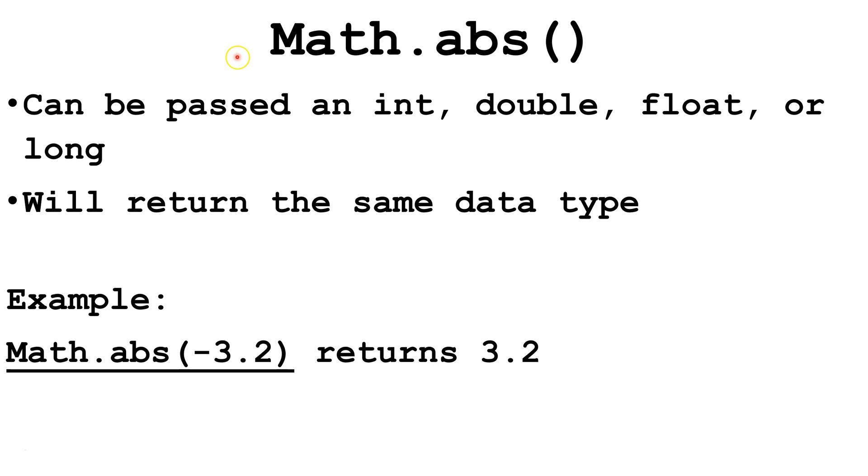Let's look at this first method, the abs method in Math. You can pass it an int, a double, a float, or a long, and it will return the absolute value of whatever data type you sent.